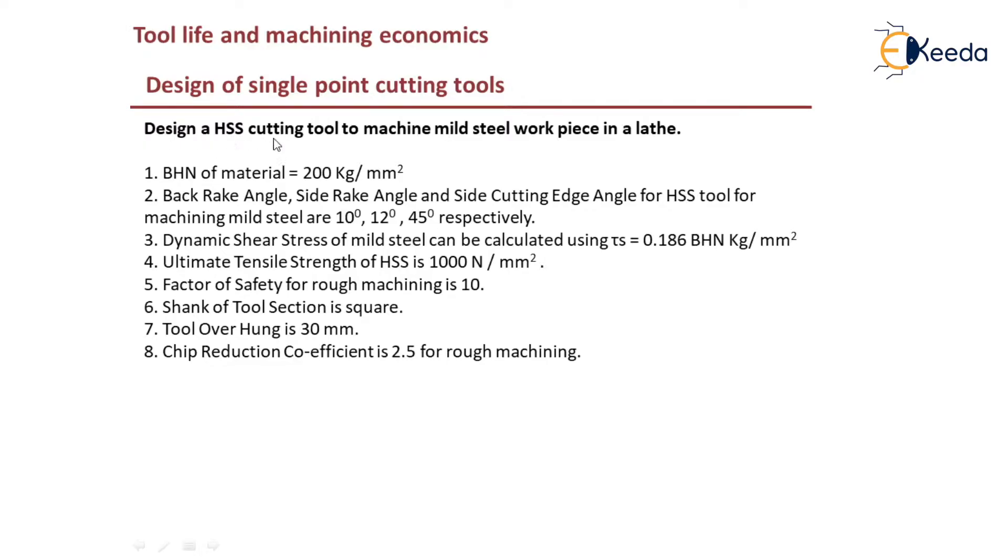BHN of material for HSS is given as 200 kg per mm square. The back rake angle, side rake angle, and side cutting edge angle for HSS tool is given as 10 degrees, 12 degrees, and 45 degrees respectively.